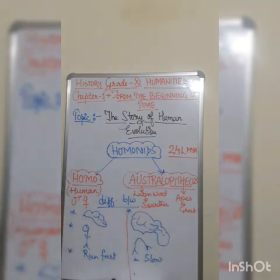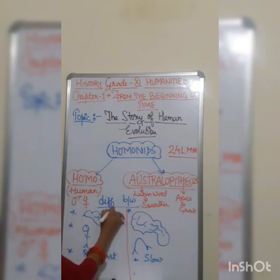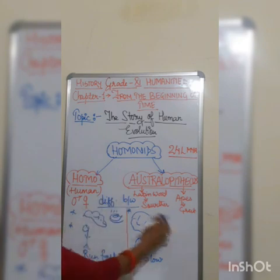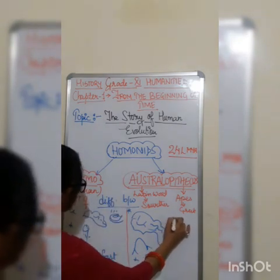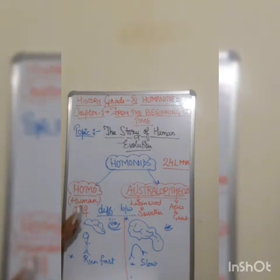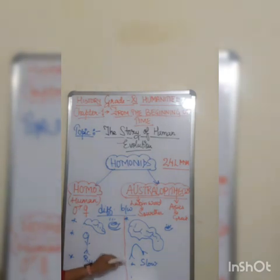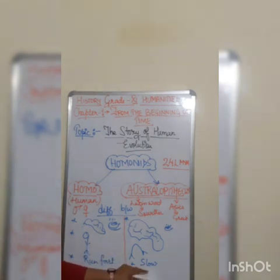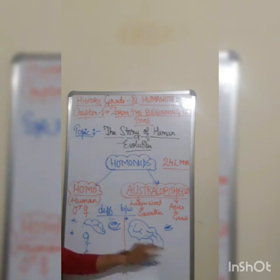Another feature is visibility — the visibility of homos is much sharper than that of australopithecus. As homo can run fast, they take less energy to hunt their animals. In the same way, australopithecus takes more energy and more time to catch their animals.